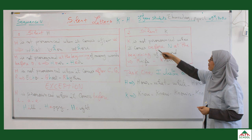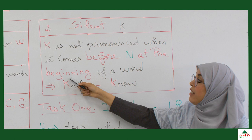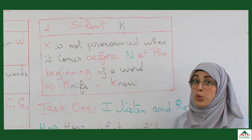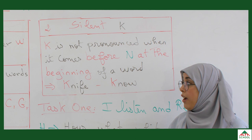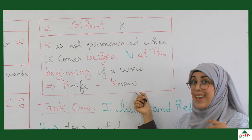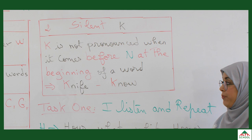Now let's move on to silent K. K is not pronounced when it comes before N at the beginning of a word. So most people who don't know about silent letters would say 'knife' — but no, that's not correct, we say 'knife'. We use a knife, fork, and spoon to eat. Similarly, most students would say 'kno' but we say 'know' — I know. So: knife, I know.